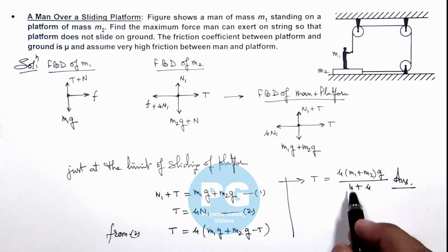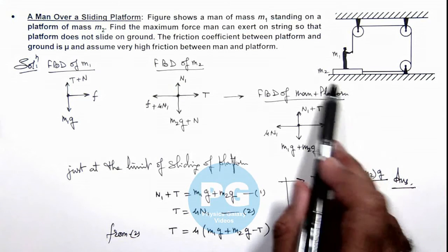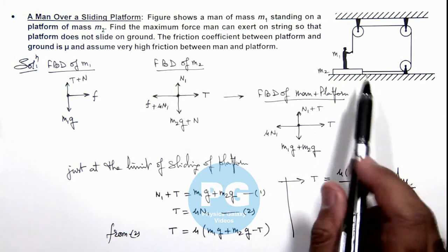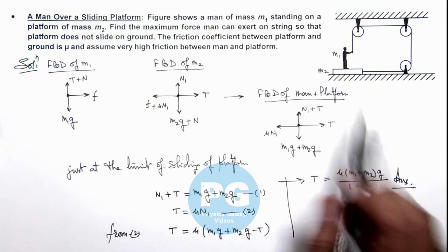This is the force which the man exerts on the string to slide the platform on the ground. If the force is less than this value, the platform won't slide.